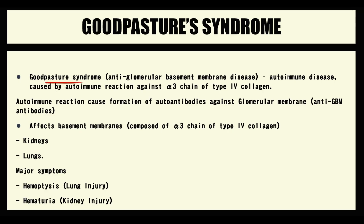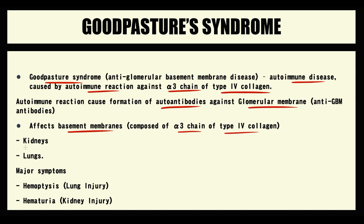Goodpasture syndrome, or anti-glomerular membrane disease, is an autoimmune disorder caused by an autoimmune reaction against the alpha-3 chain of type 4 collagen. Autoimmune reaction induces formation of autoantibodies against the glomerular membrane. These autoantibodies affect basement membranes, which are composed mostly of alpha-3 chain type 4 collagen — specifically the basement membranes of kidneys and lungs. Damage to these two organs causes two signature symptoms: hemoptysis due to lung injury and hematuria due to kidney injury.